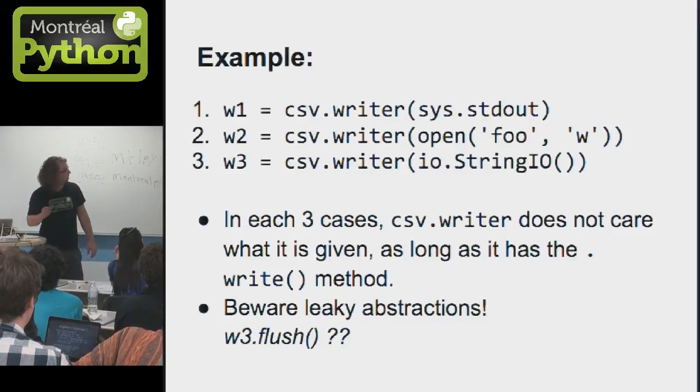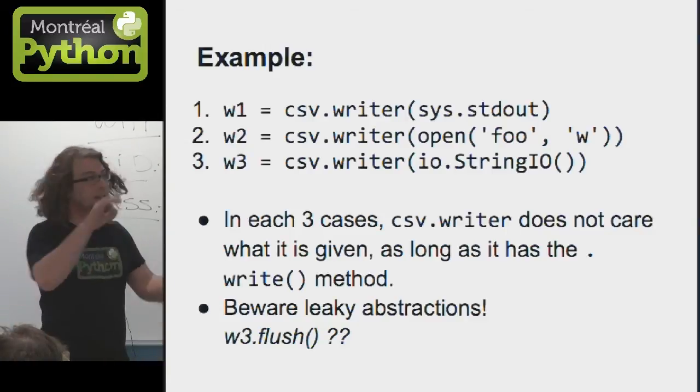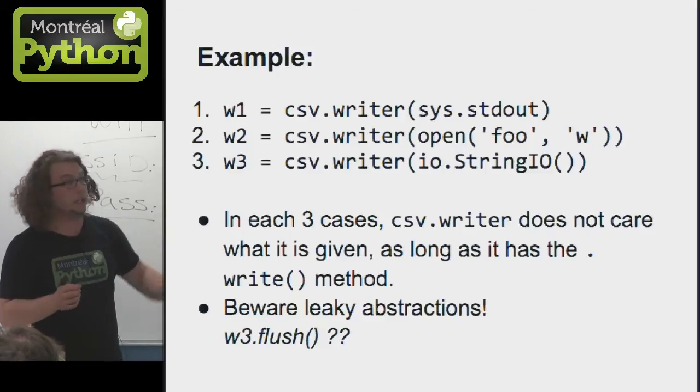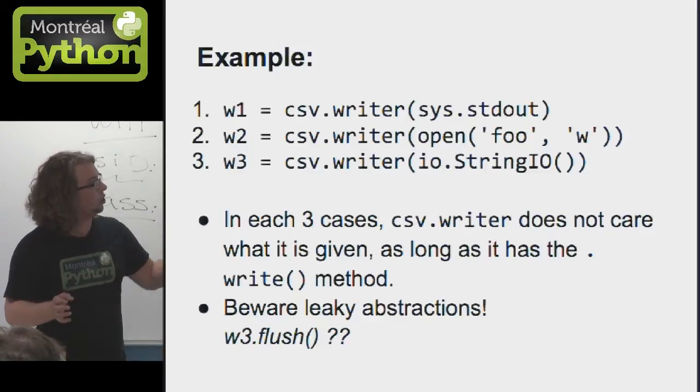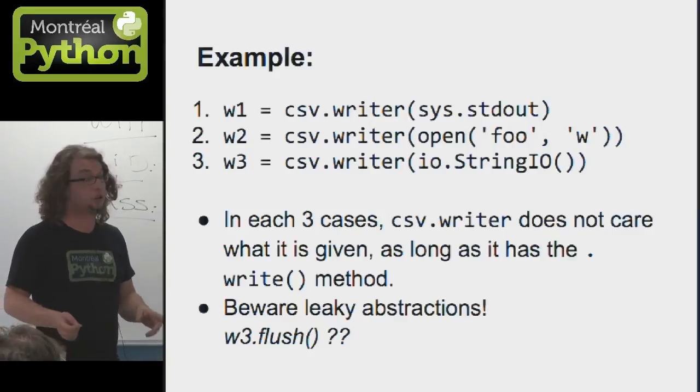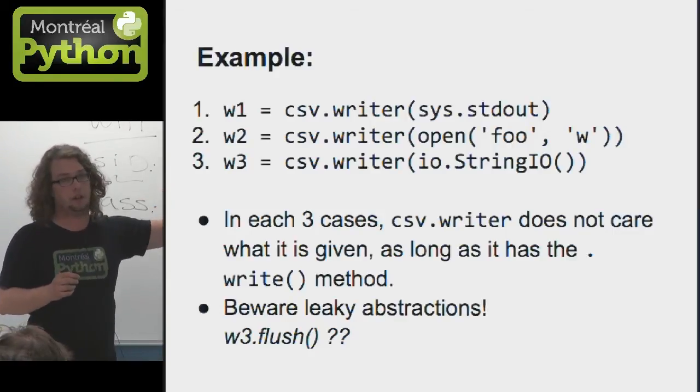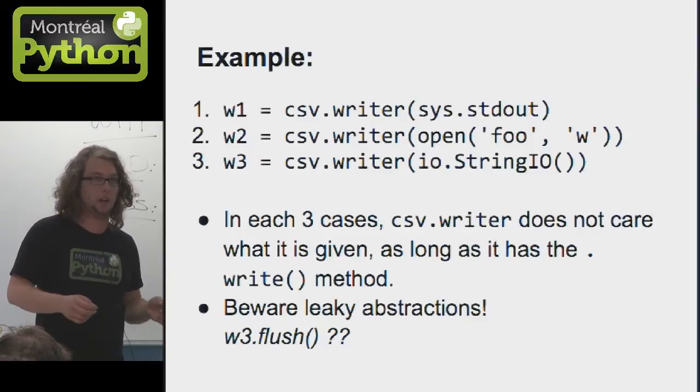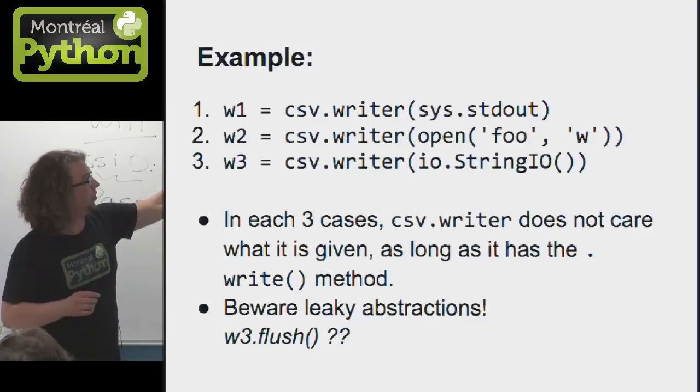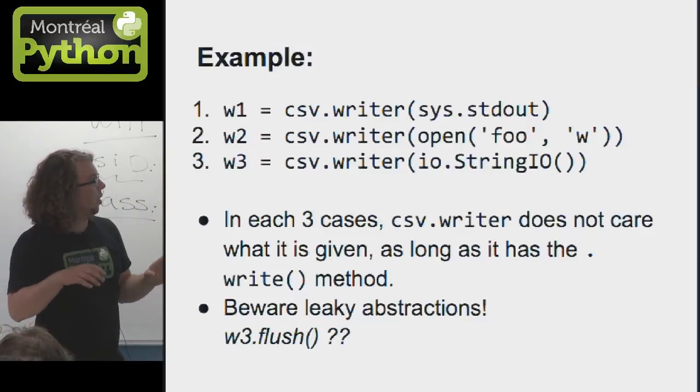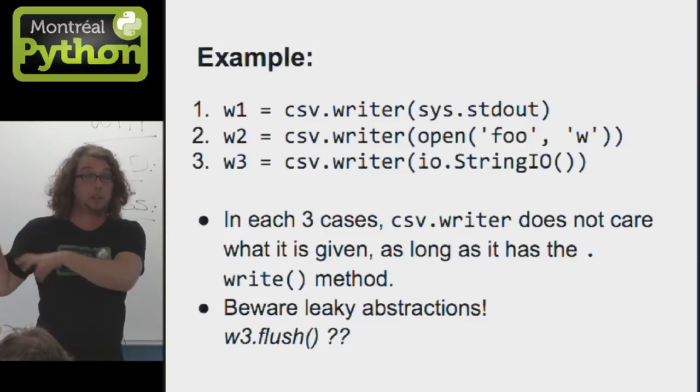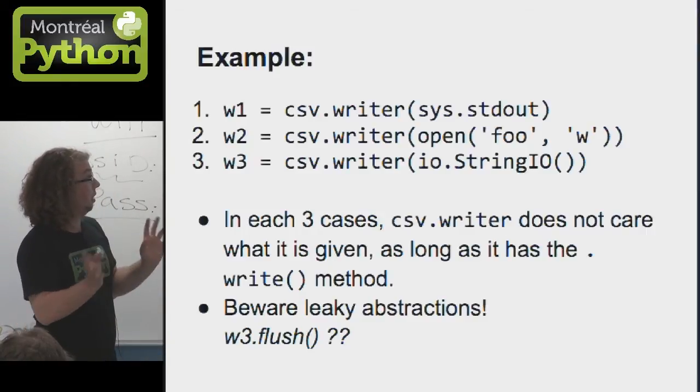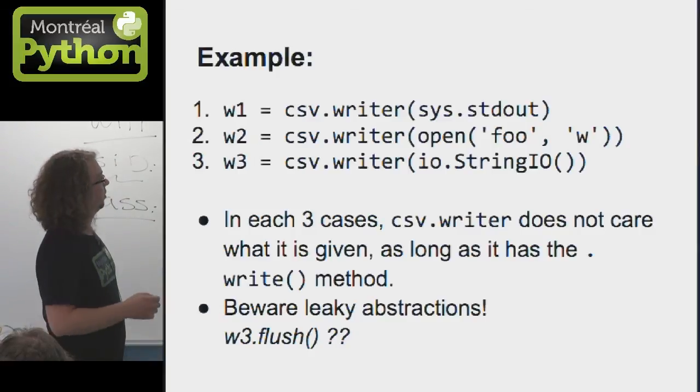One of the things to be careful about is leaky abstractions. Let's say that you have a flush method in your CSV module, but you don't really have to flush, for example, a buffer string. You have to do it for the file and the standard output. So instead of just raising an exception when you do a flush on the third method, this has to be given to the strategy, which is going to be a stub with a no-op, to make sure that you don't have an exception that goes with this.